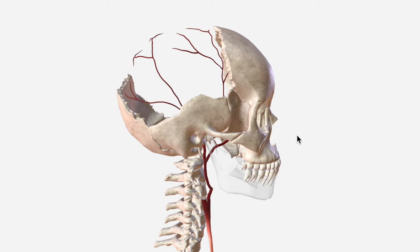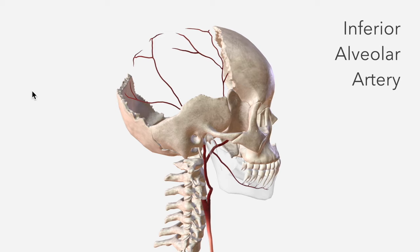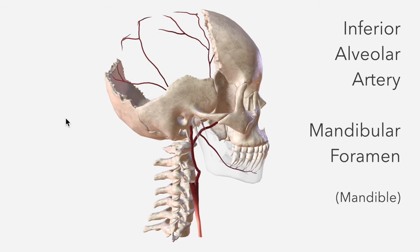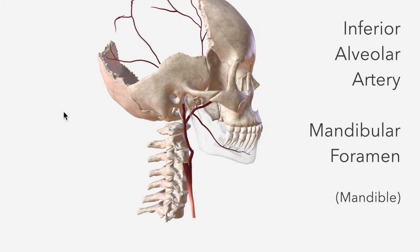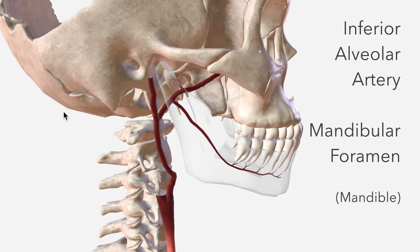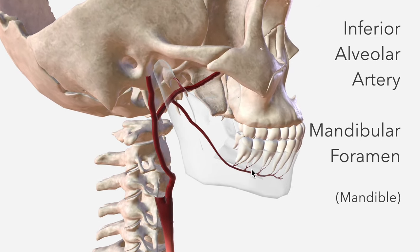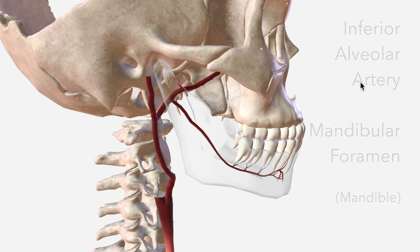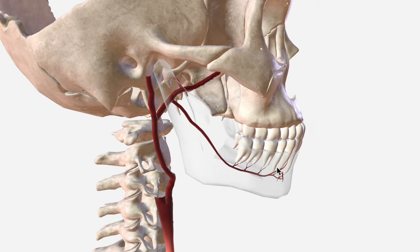Next, we have the inferior alveolar artery, which enters a hole in the mandible called the mandibular foramen, and supplies the body of the mandible as well as the mandibular teeth. It has a mental branch, which passes through the mental foramen of the mandible to supply part of the lips and the skin in this area.